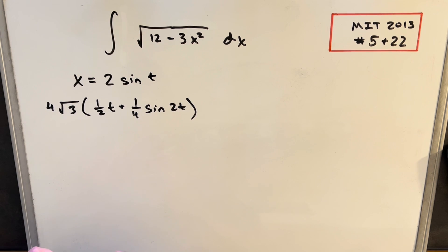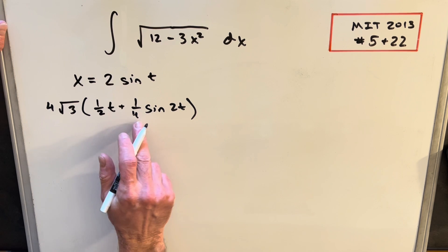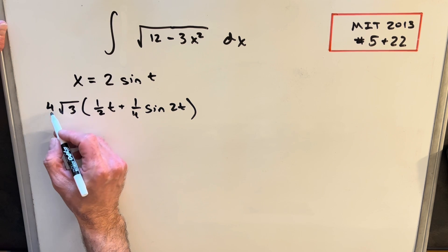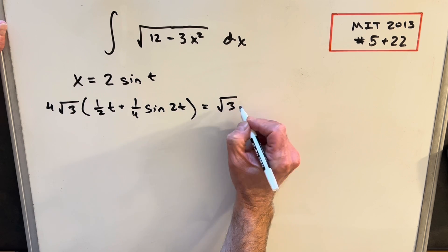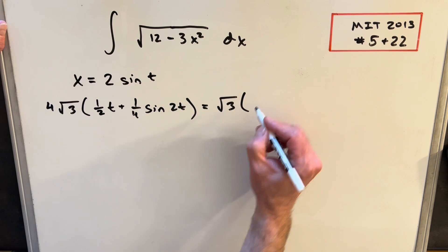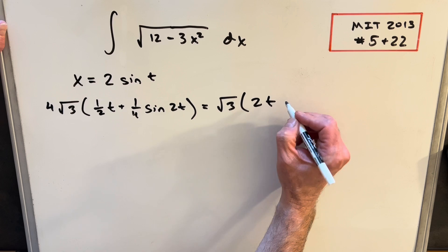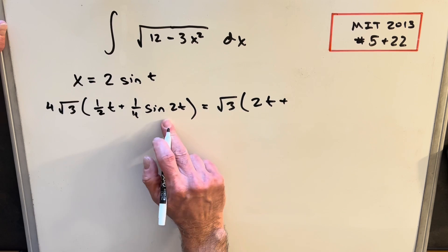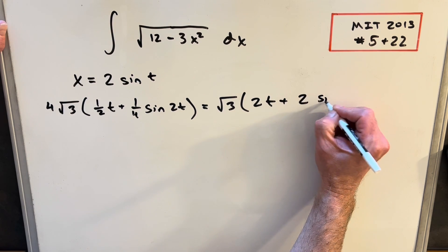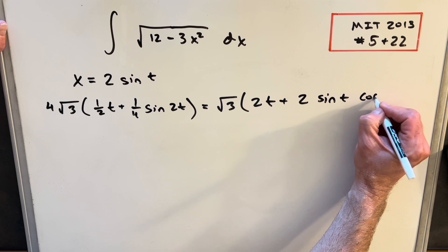Okay, from here we're almost ready to back substitute, but I think I want to do a few things first. So I think what I'm going to do is I'm going to take a 1 fourth out of here to cancel with this 4. So that in front, we're going to have square root of 3. If I take a 1 fourth out here, we're going to have 2t plus sine of 2t. But I'm going to write that as 2 sine t cos t.